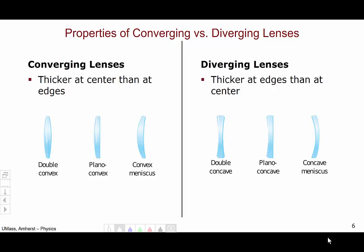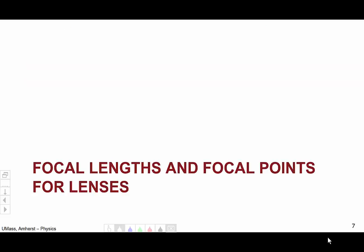On the flip side, diverging lenses are thicker at the edges than they are in the middle. Here's a couple of shapes that are examples of diverging lenses. You don't need to know the names of these particular shapes. You just need to know that converging lenses are thicker at the middle, and diverging lenses are thicker at the edges. So, now we know what lenses are, let's move on to probably the most important property of lens, the focal length and focal points.